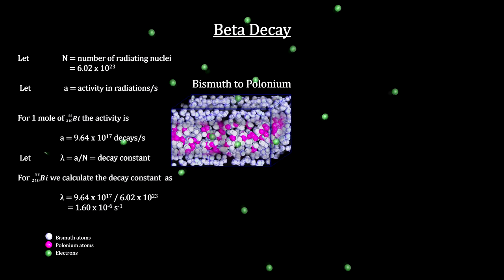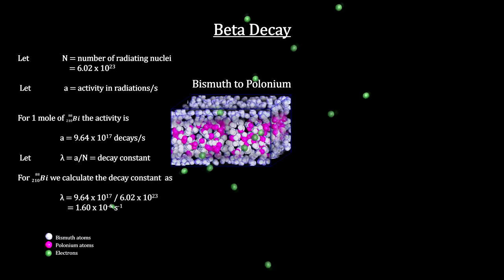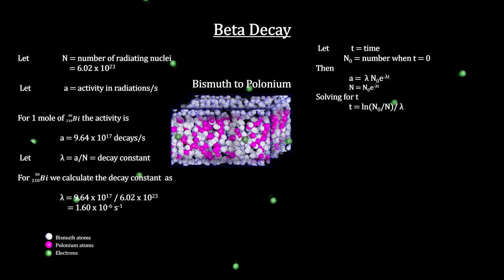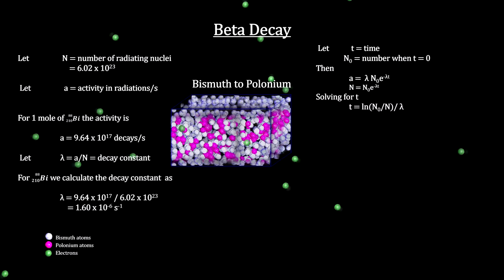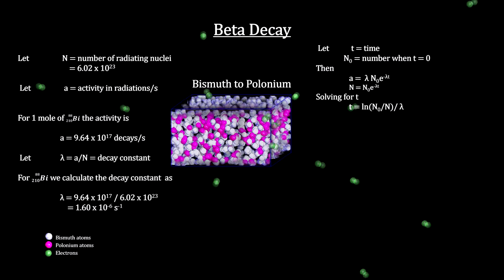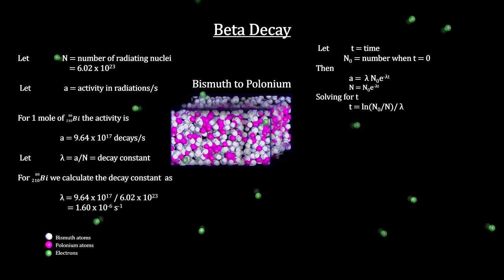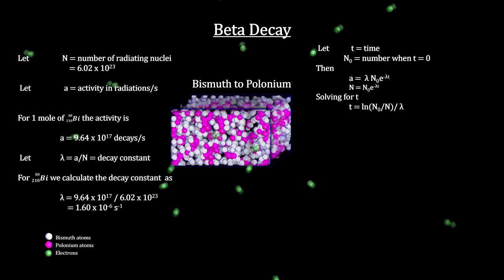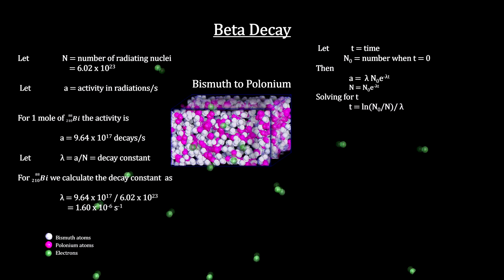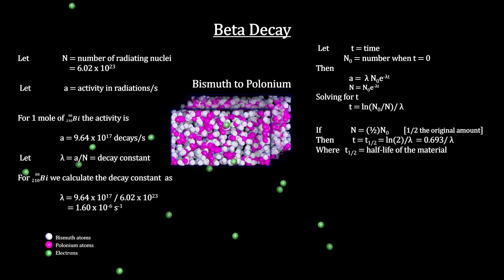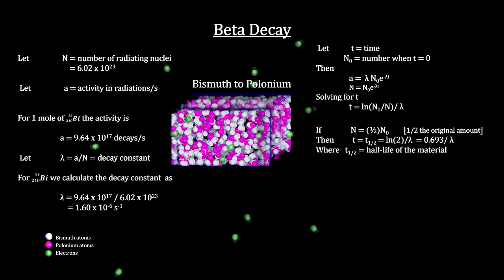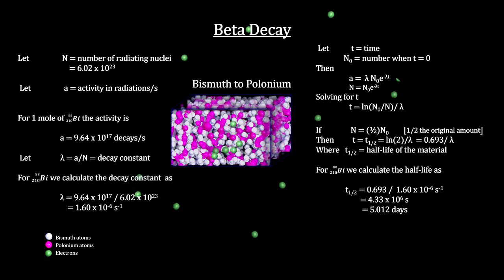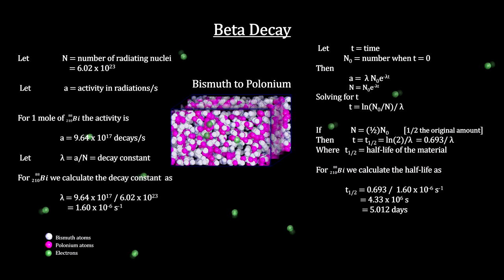We find that the decay constant is always a small number, constant over time, and different for different materials. Both the activity rate and the number of radioactive nuclei vary over time — as a sample decays, the number of radioactive nuclei decreases, so the activity rate also decreases. From this we get the exponential law of radioactive decay. The half-life is the time it takes for the material and activity to be reduced by half. Bismuth-210 has a half-life of five days, meaning it takes five days for half of any amount to transform into polonium.